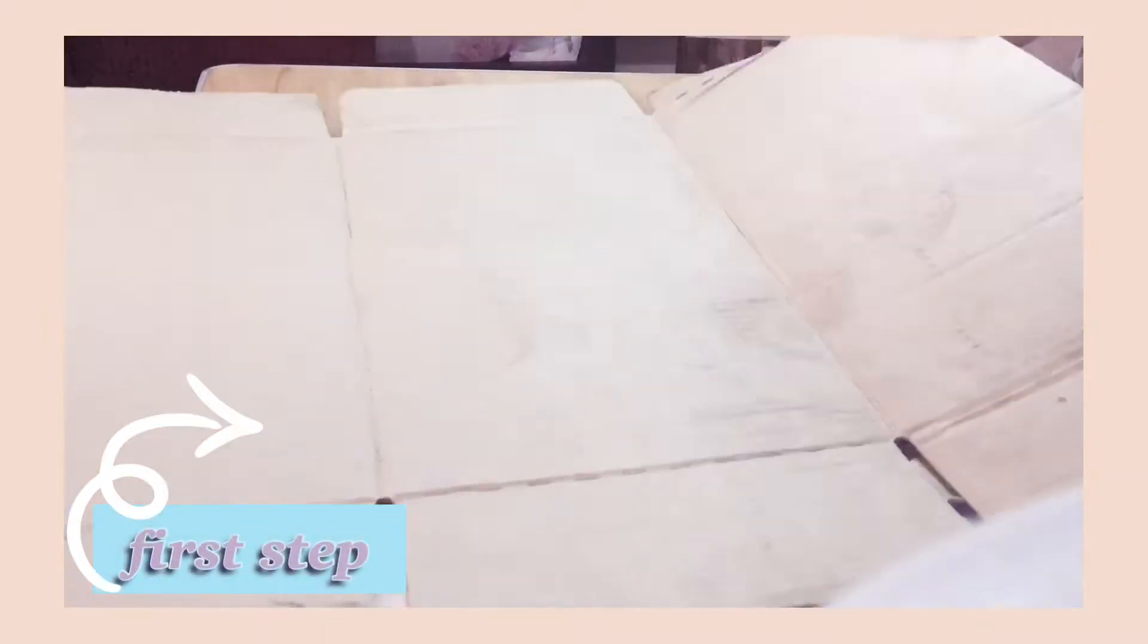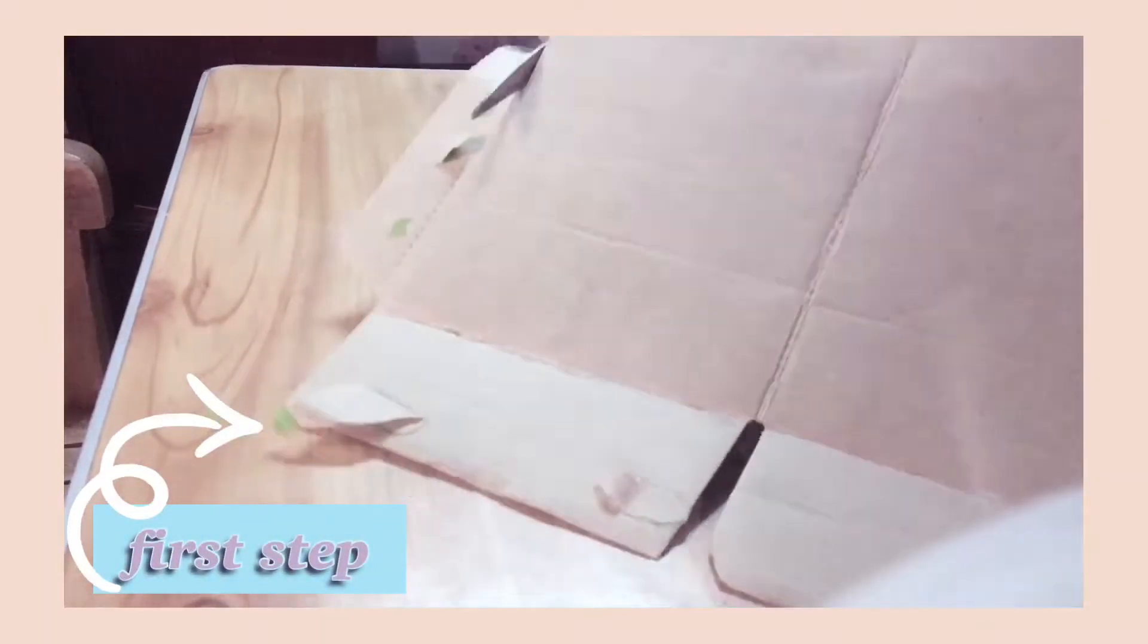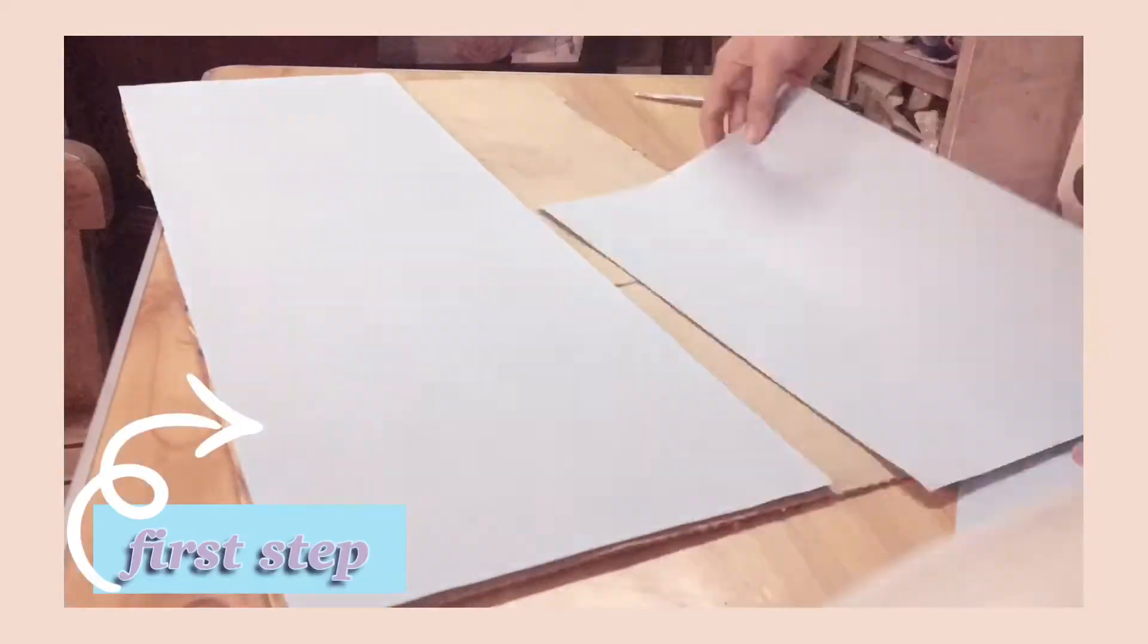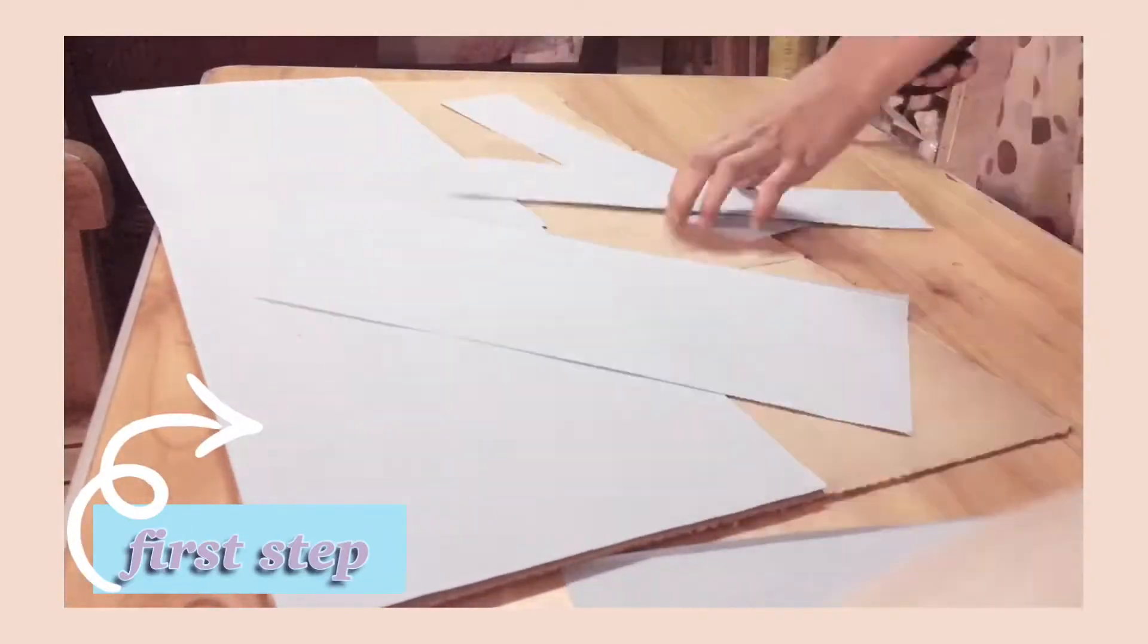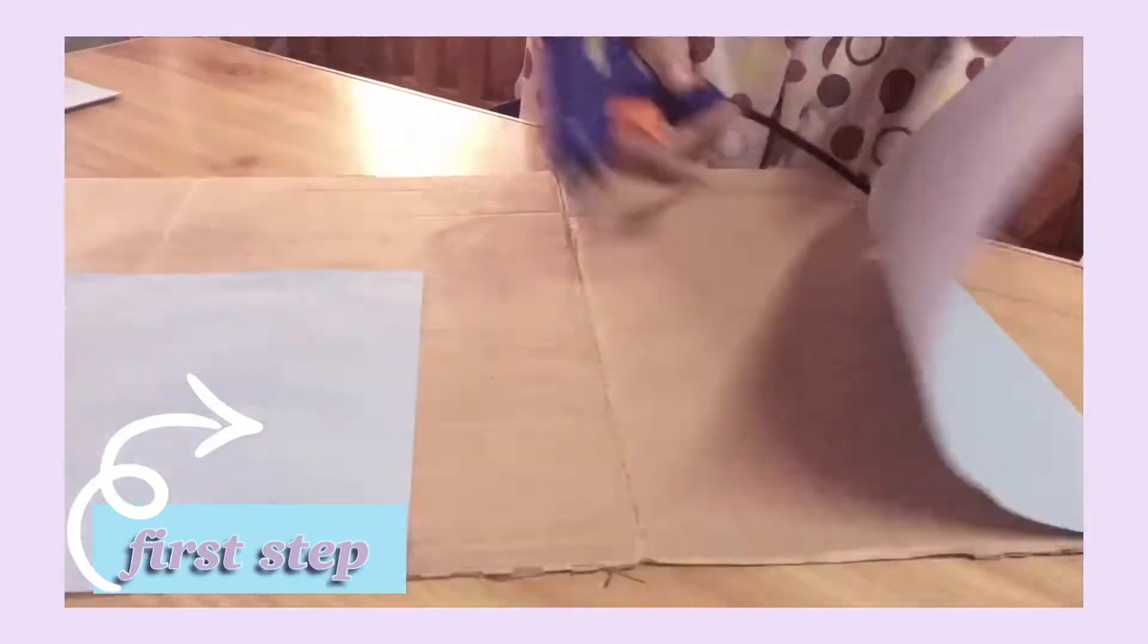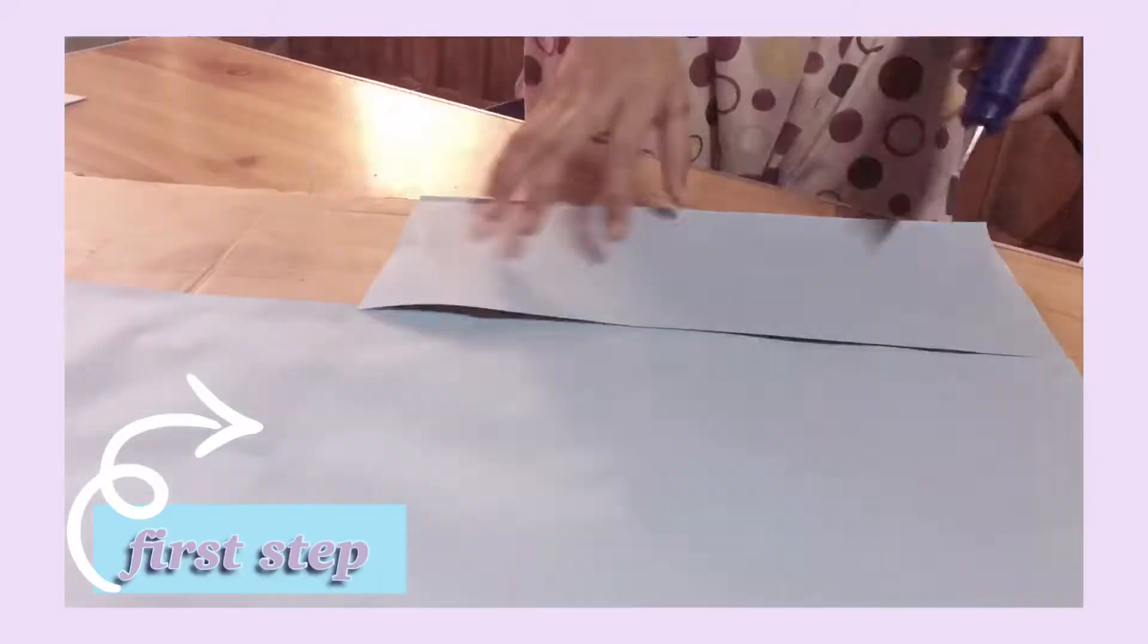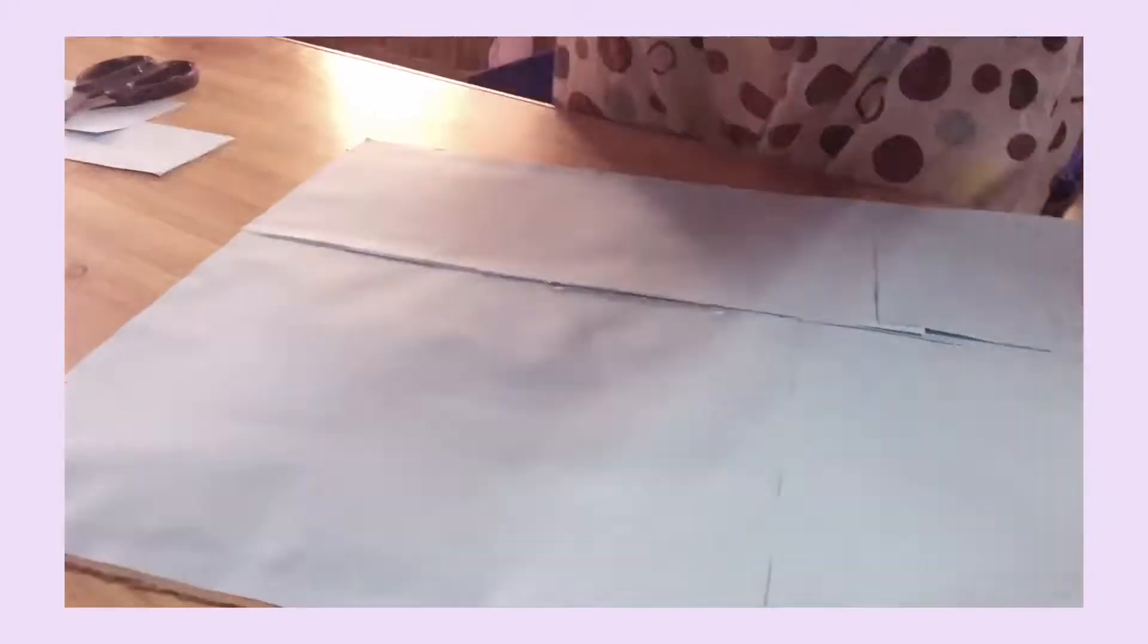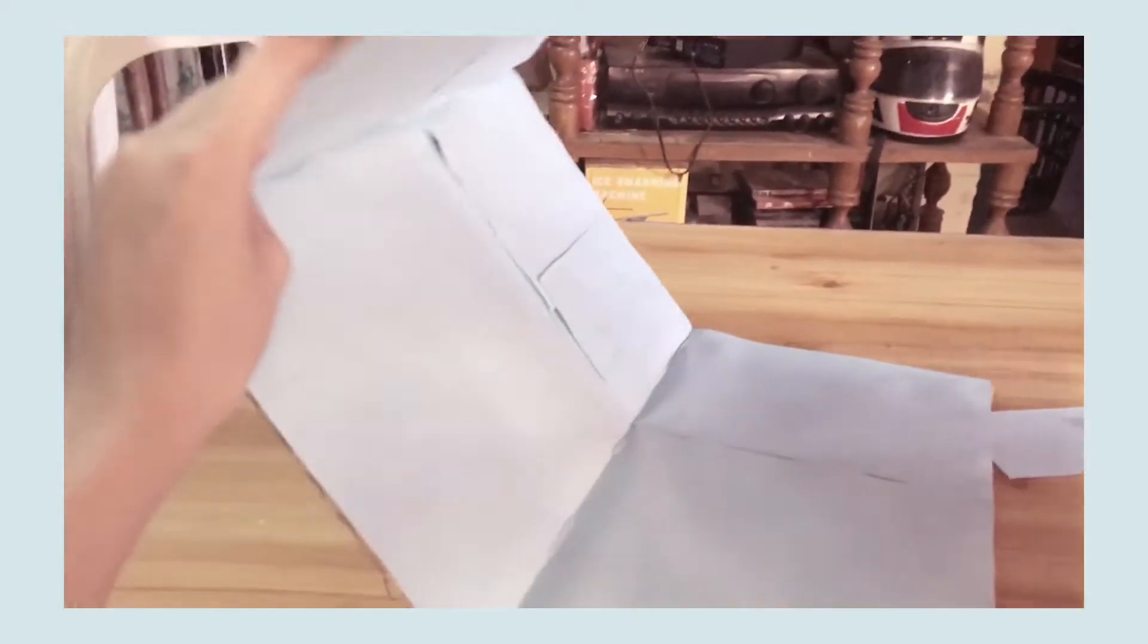The first step is to cut the carton box in the desired size, and then just glue the construction paper to make it colorful. And here is the finished product.